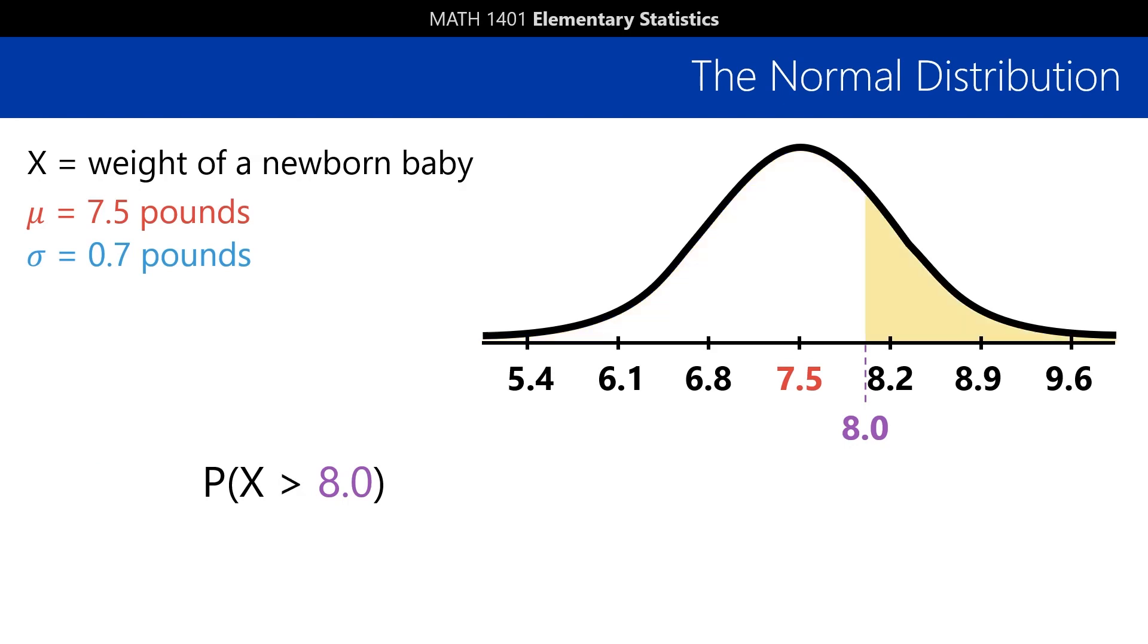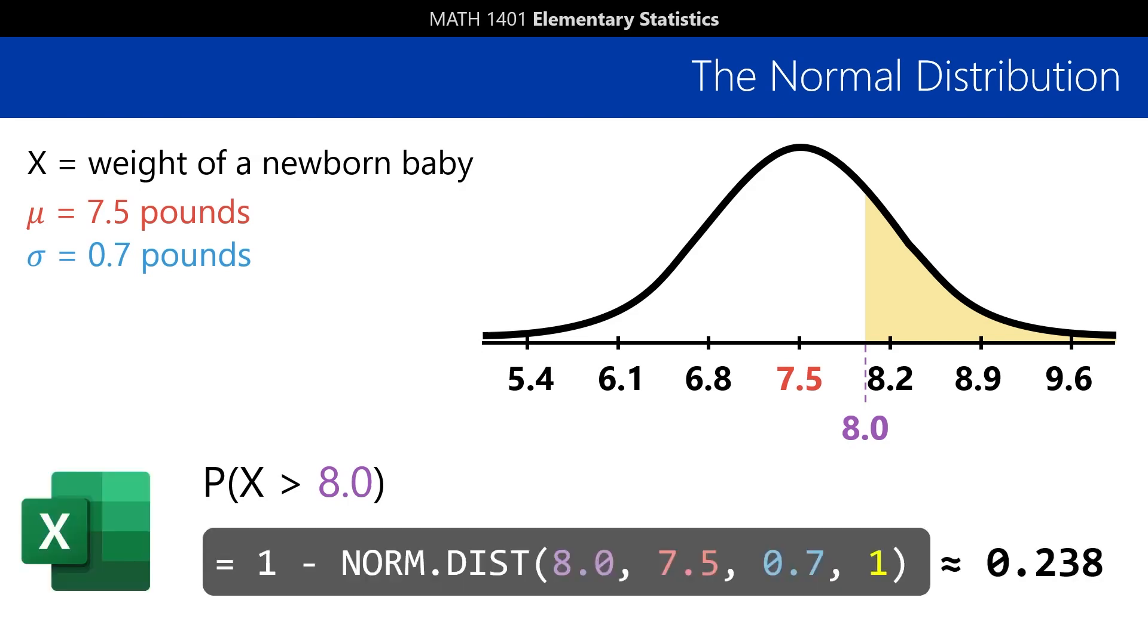What if we want the probability that a newborn weighs more than 8 pounds? For that, we can just use the complement rule and find 1 minus the probability that the weight is less than or equal to 8 pounds, which gives about 23.8%.